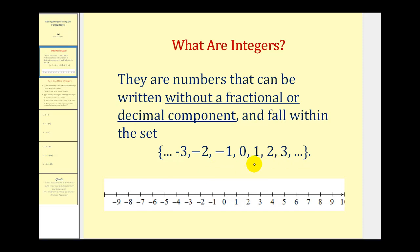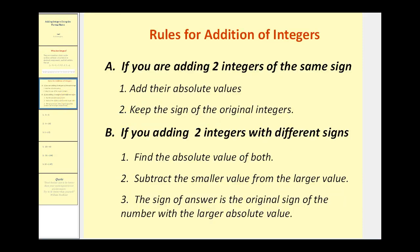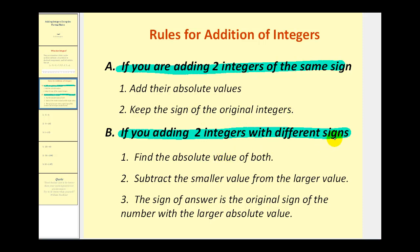Let's go over the formal rules for adding integers. When adding two integers, it'll fall into one of two conditions: either we're adding two integers with the same sign, or we're adding two integers with different signs. If we're adding integers with the same sign, we add the absolute values of the numbers and then keep the sign of the original integers. However, if we're adding two integers with different signs, we take the absolute values of both, subtract the smaller value from the larger value, and then the sign of the answer is the original sign of the number with the larger absolute value.